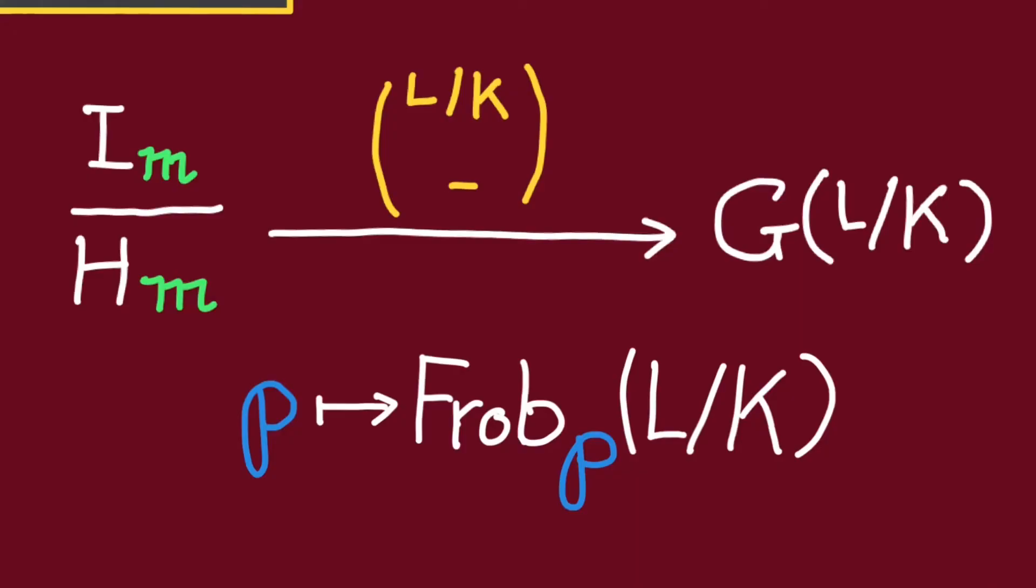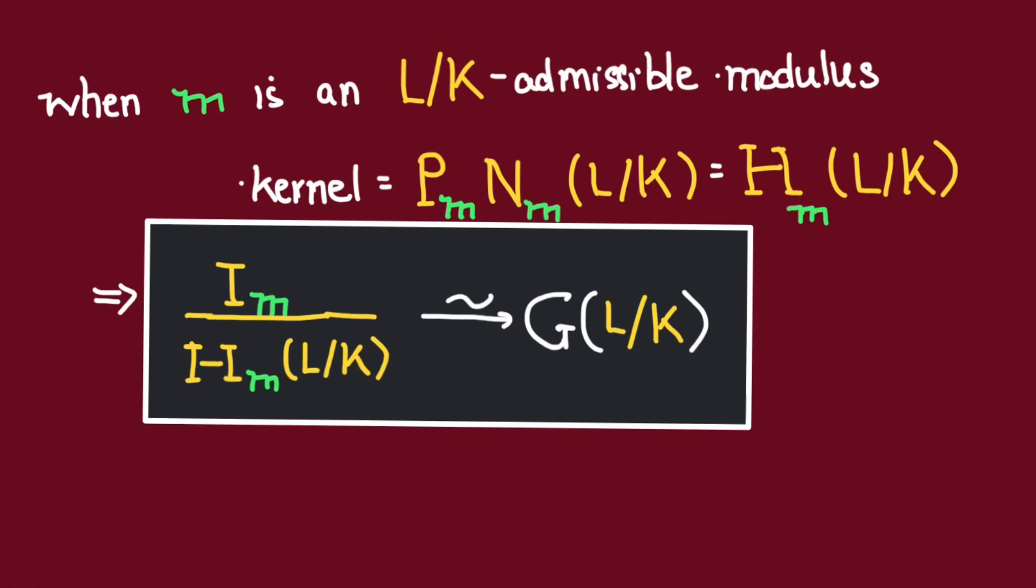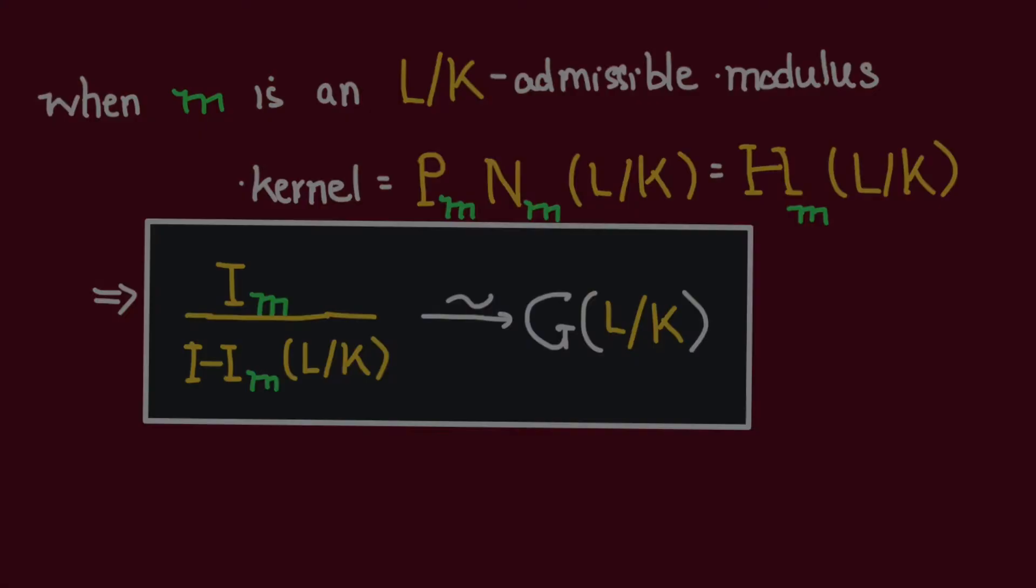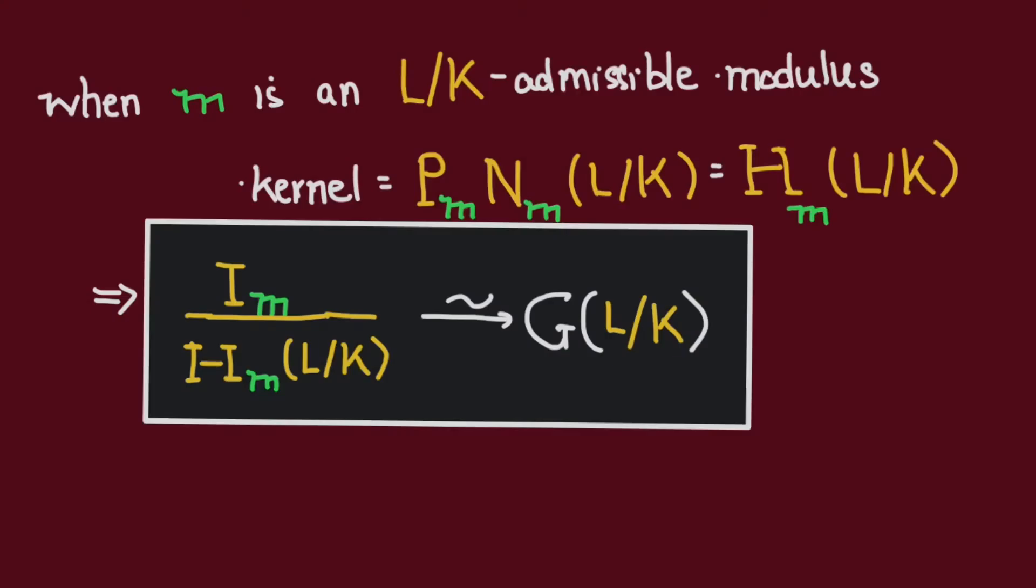Now, when M is an admissible modulus, then this map induces an isomorphism between the generalized ideal class group corresponding to M with the Galois group of L over K. This theorem is called Artin reciprocity.